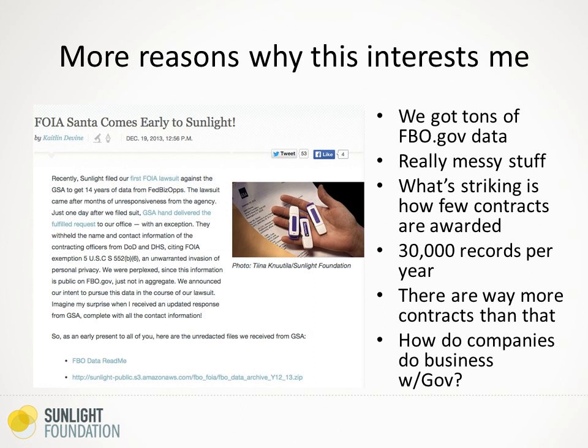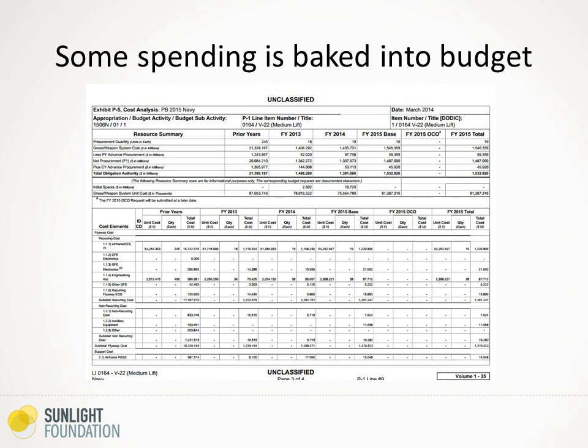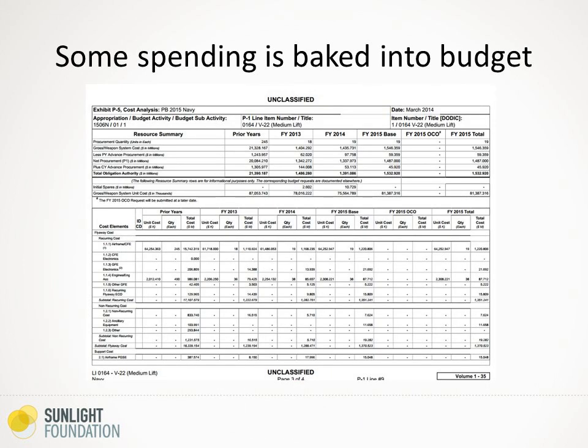This made me start wondering how companies are doing business with the government. Some of the spending is baked into the federal budget — it never goes through a normal contracting process because there's no need for competitive bidding; it's already in the budget. They're planning on using specific companies. This is the V-22 Osprey — this is a page from a Naval Aircraft book showing you how much they're buying year by year.